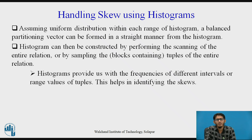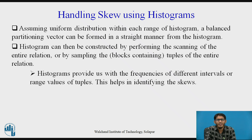Now we will see how to handle skew using histograms. Assuming uniform distribution within each range, a balanced partitioning vector can be formed straightforwardly from the histogram. Histograms can be constructed by scanning the entire relation or by sampling the blocks containing tuples. Histograms provide us with the frequencies of different intervals or range values of tuples, helping identify skew. When we see the frequency of different intervals, we can determine which range is skewed because the number of tuples mapped to it is not uniform compared to the others.